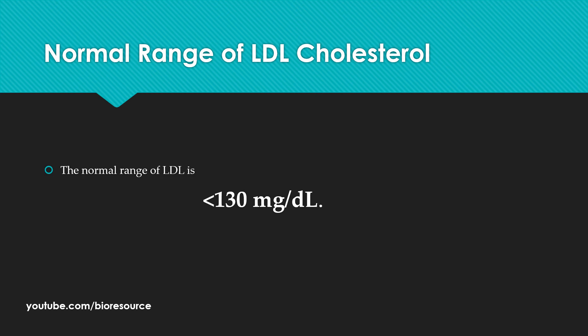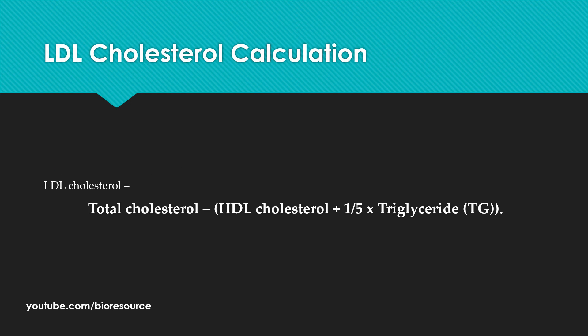The normal range for LDL cholesterol is less than 130 mg per deciliter. The optimal level is less than 100 mg per deciliter, and the near-optimal range is less than 130 mg per deciliter. LDL cholesterol can be calculated from total cholesterol and triglycerides using the formula: Total Cholesterol minus HDL Cholesterol plus one-fifth of Triglycerides equals LDL Cholesterol.